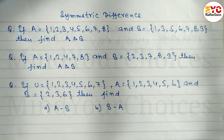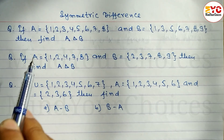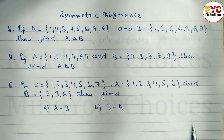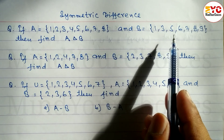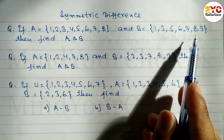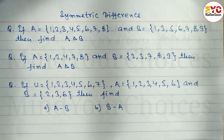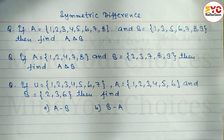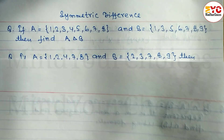Hello everyone. In this video we will learn how to find out symmetric difference. So we have a question — number one: set A is equal to {1, 2, 3, 4, 5, 6, 7, 8} and set B is equal to {1, 3, 5, 6, 7, 8, 9}. We have to find out A symmetric difference B. This is the sign of symmetric difference, which is in the form of a triangle. So let's take a start.